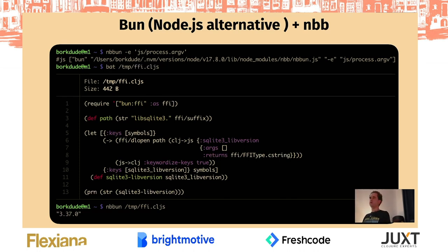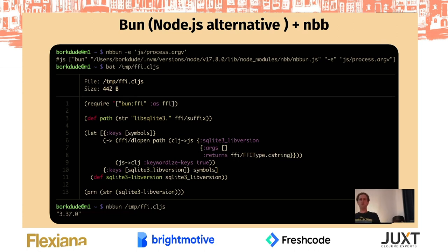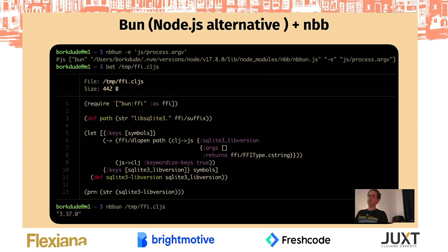I think for the ClojureScript ecosystem it might be nice to keep an eye on BUN. Facebook is also working on a machine learning library that works in BUN — that's pretty interesting, maybe not now because it's pretty experimental, but maybe in a few years we'll be moving some stuff from Python to this. And then we can use it from ClojureScript, which seems a win to me.